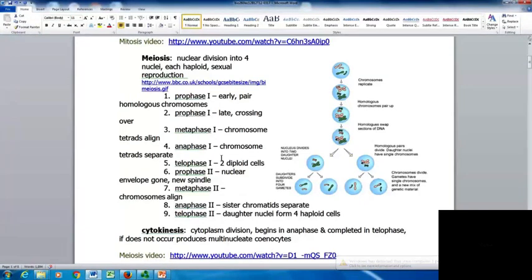In prophase II, the nuclear envelope is gone and you make a new mitotic spindle. Metaphase II, chromosomes align. Anaphase II, sister chromatids separate. In telophase II, your daughter nuclei will have four haploid cells. The first time you replicate the chromosome, the second time you don't replicate the chromosomes. That's why you have half the genetic information at the end in your four daughter nuclei.